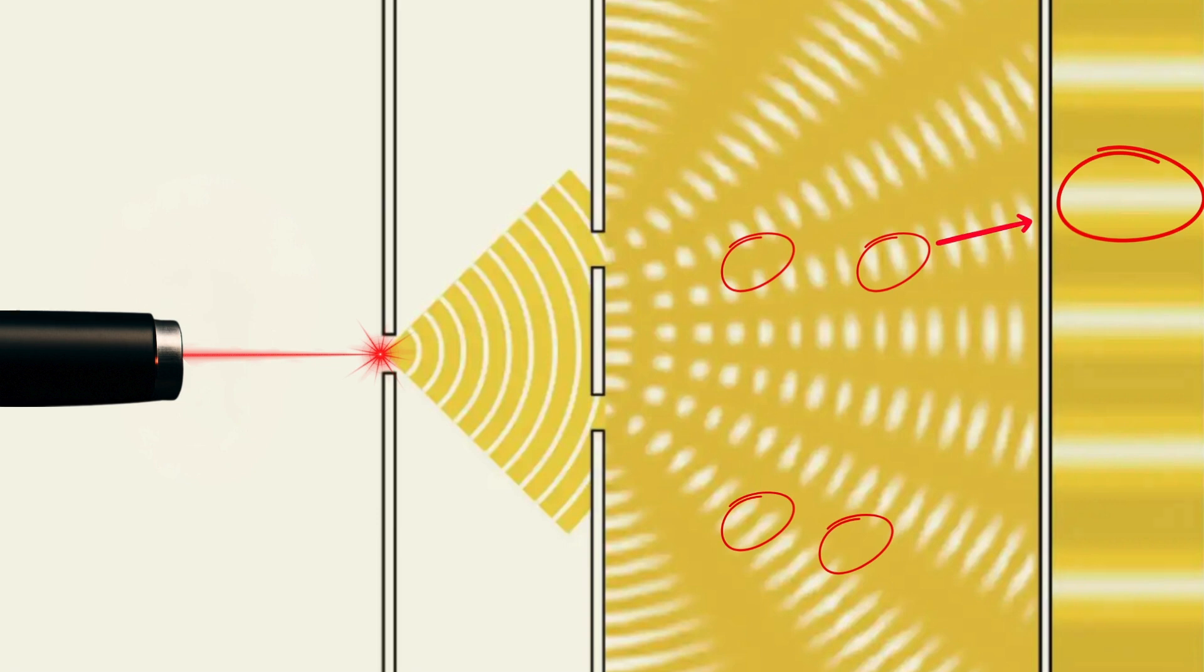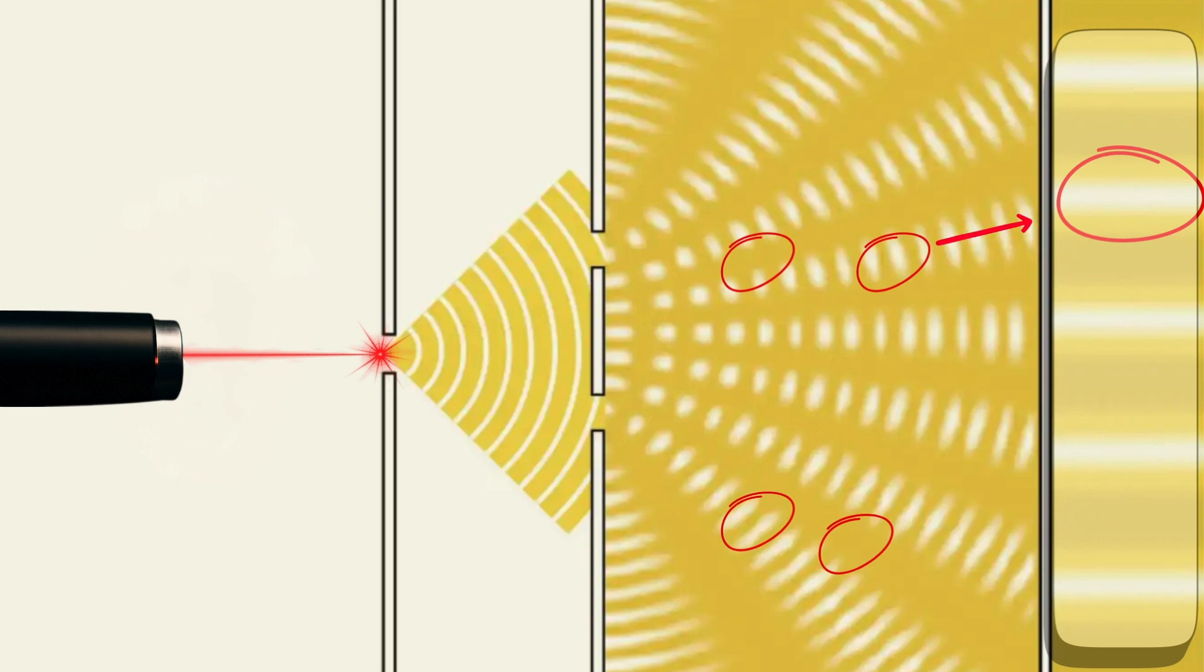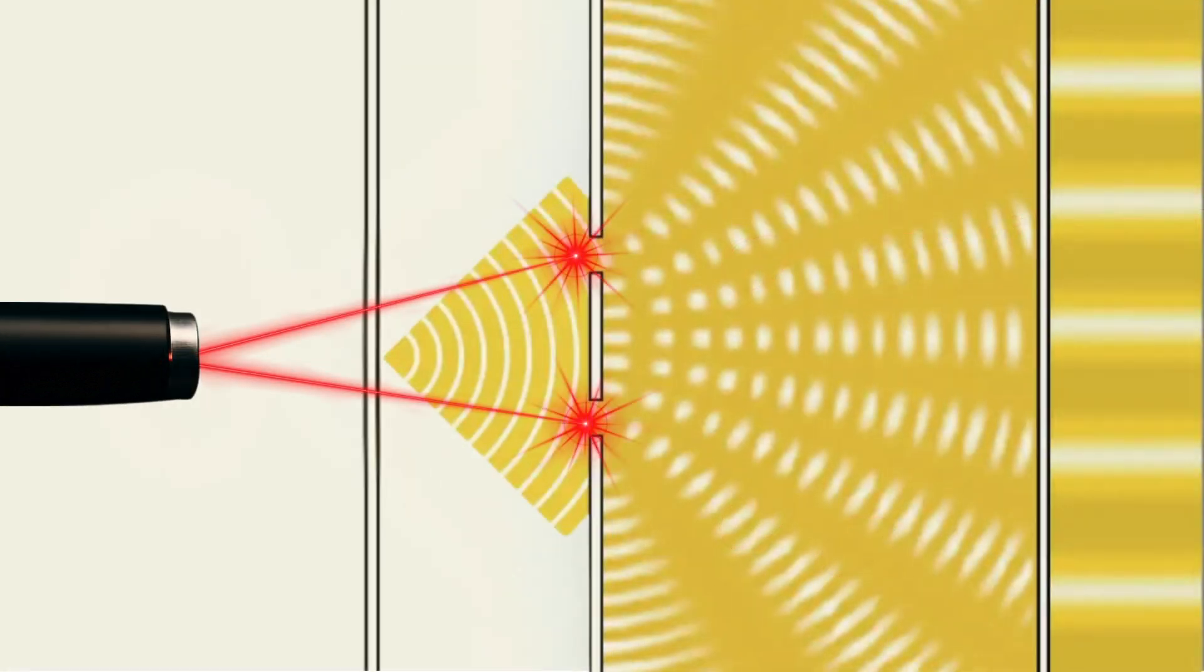Other photons don't align destructively, and they do leave visible marks on the backplate. By the end of the experiment, a characteristic pattern of alternating bright and dark fringes appears. This pattern has traditionally been interpreted as evidence that, in the absence of observation, light behaves like a wave.